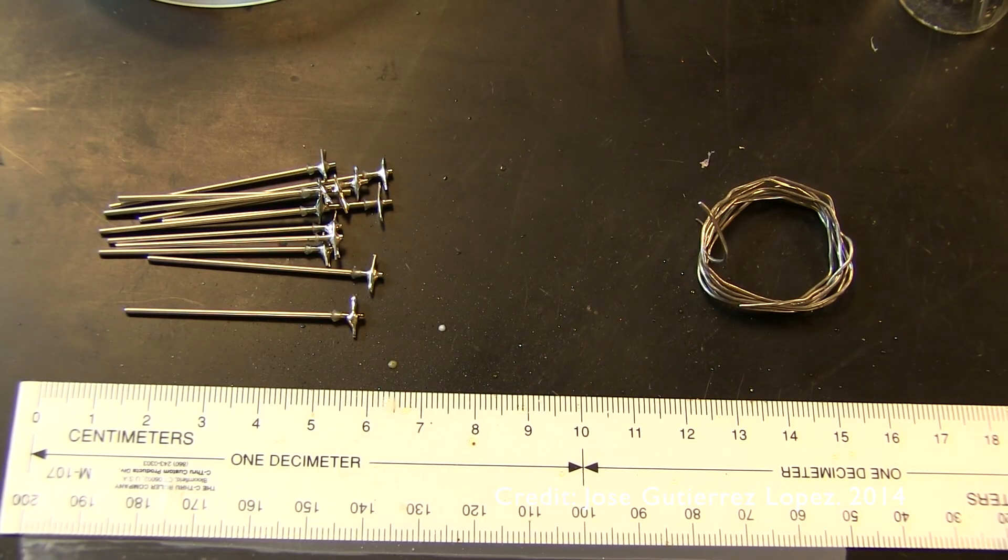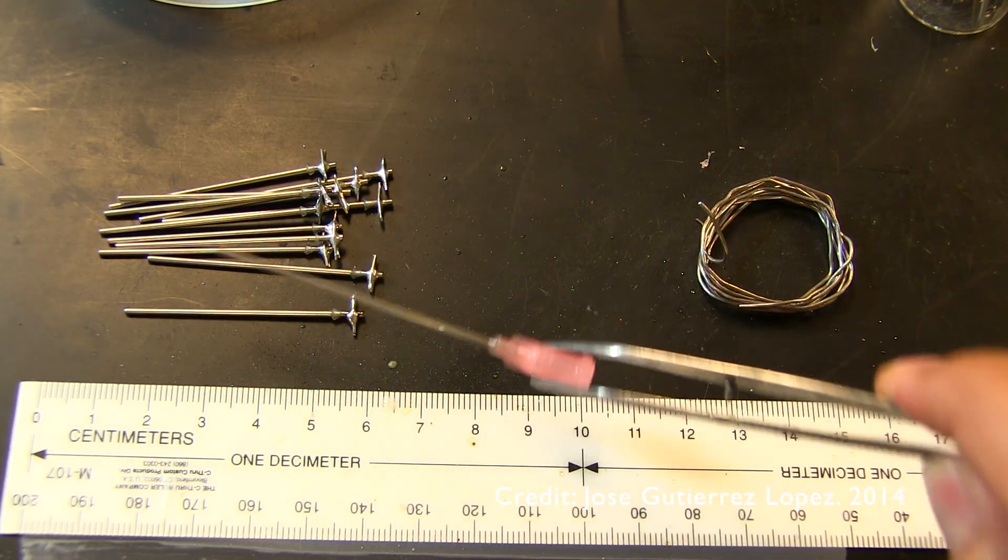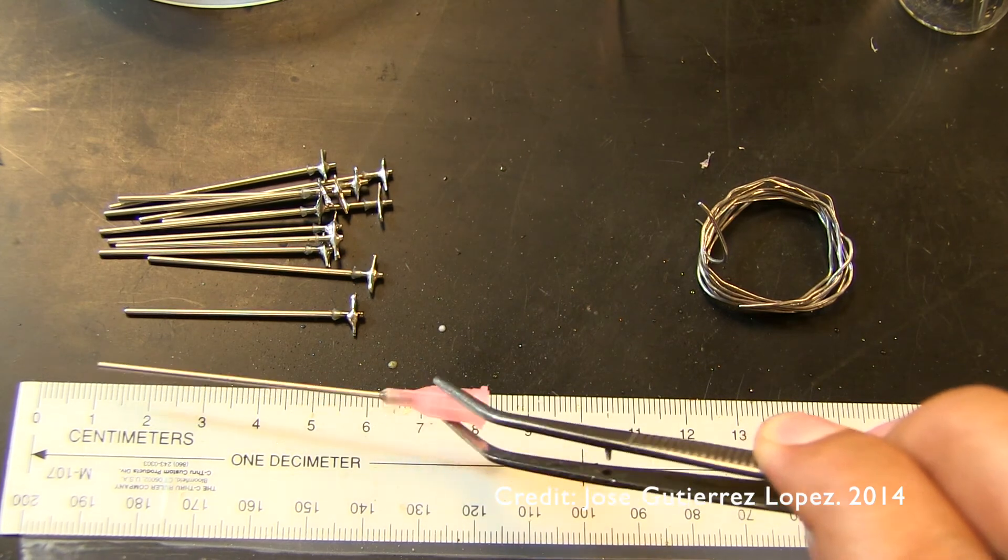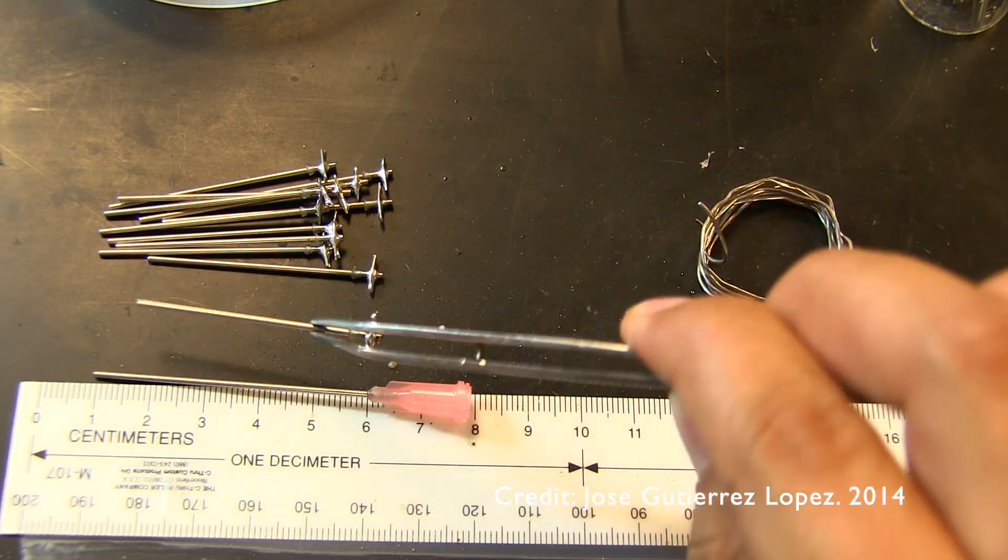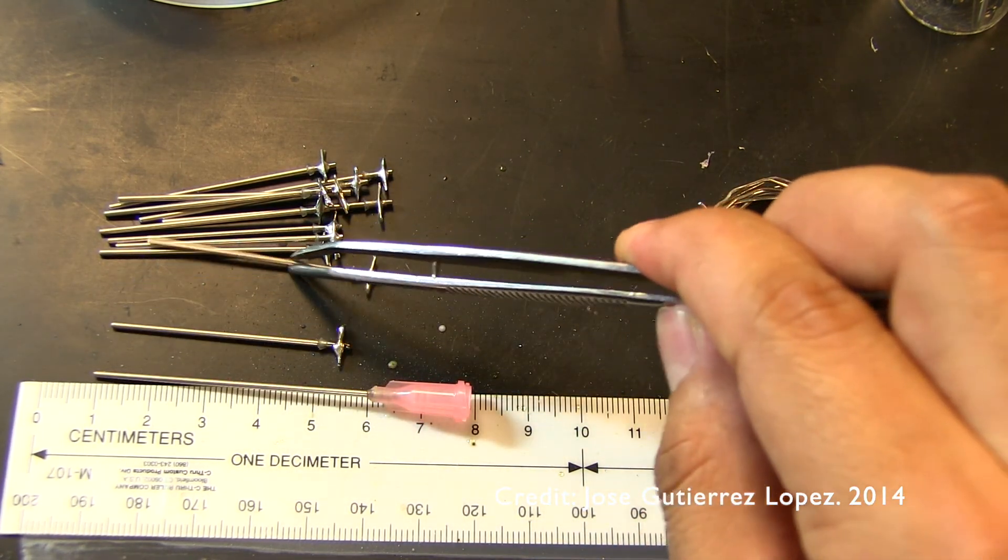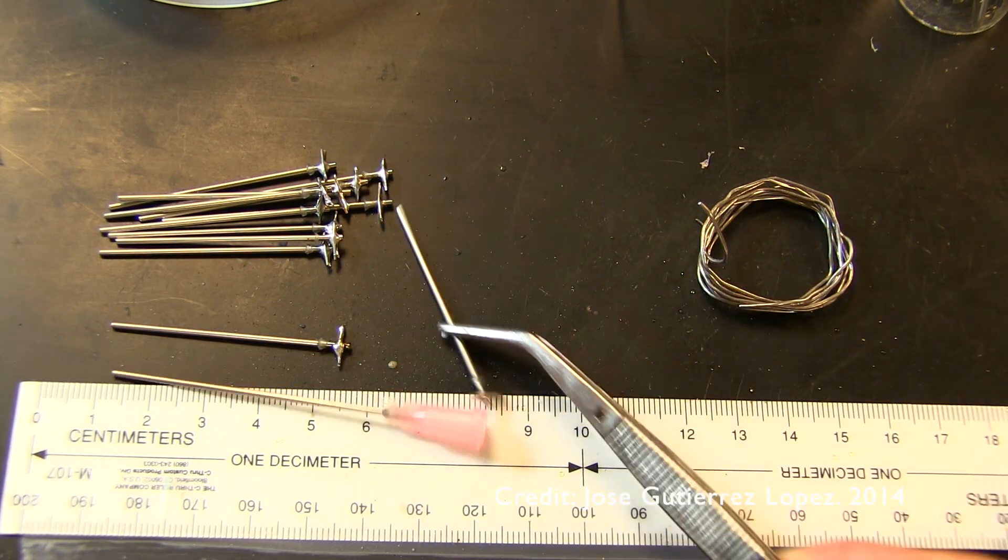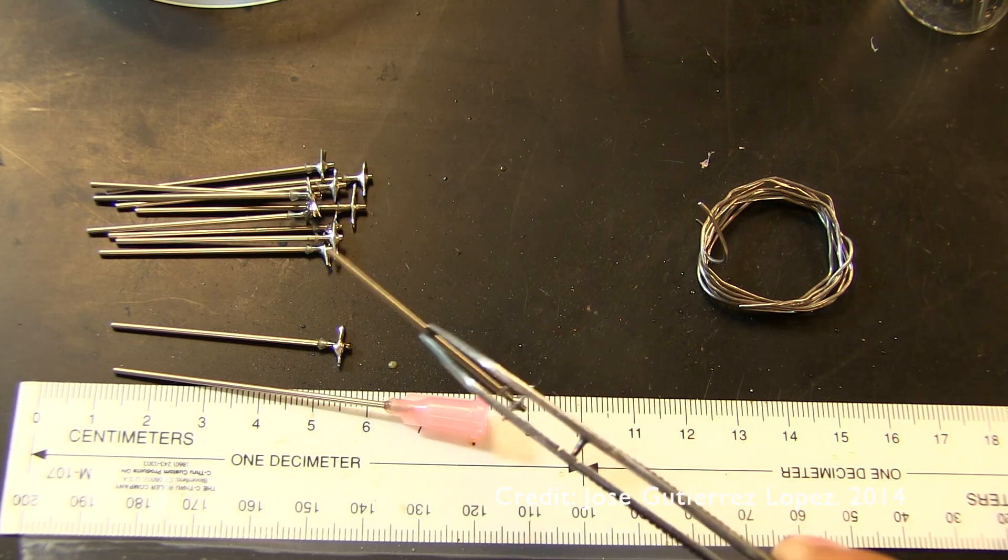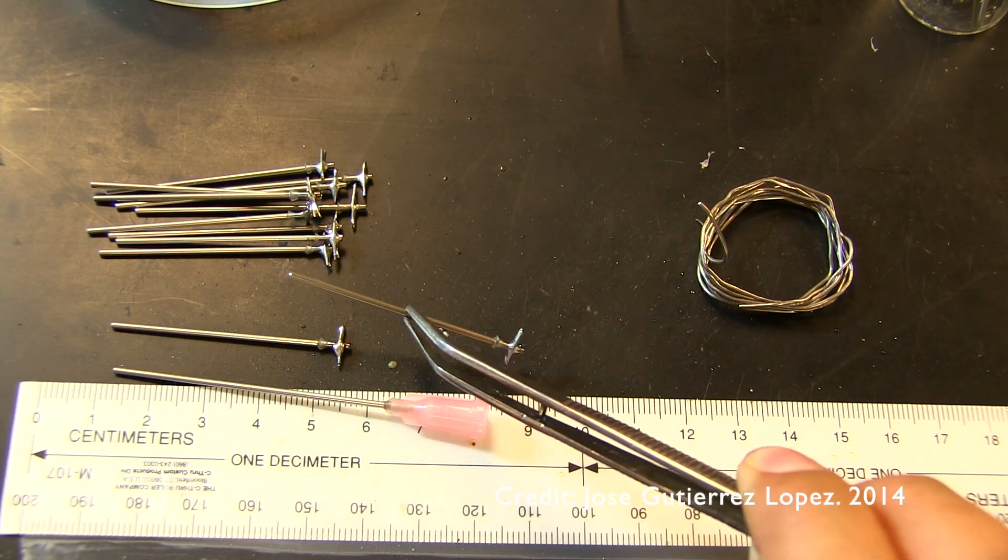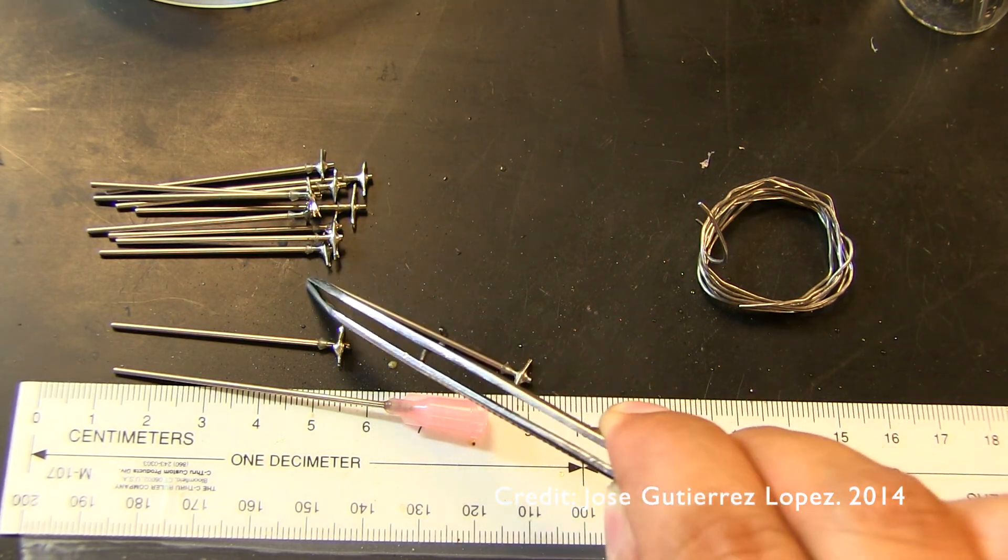Alright, there you have it. So that's the entire process to take one of these hypodermic needles and turn them into what you'll be using for your sensor, which is a needle but it's sealed on one side.